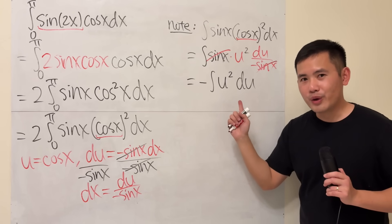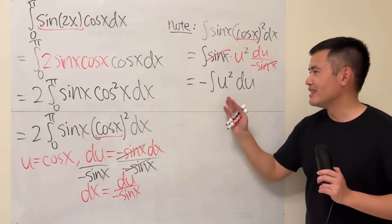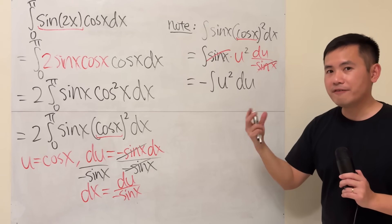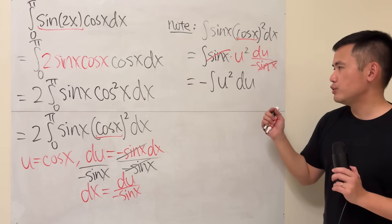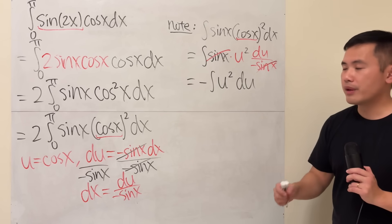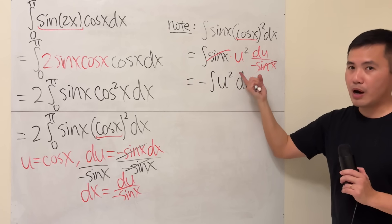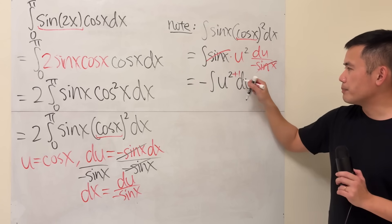Now, once we are in the u world, good things are happening. Let me tell you that. Either we recognize this as the derivative of some function, or you can just use the reverse power rule. Right here you can use the reverse power rule because we have u to a power, right? So let's go ahead and add 1 to the power.